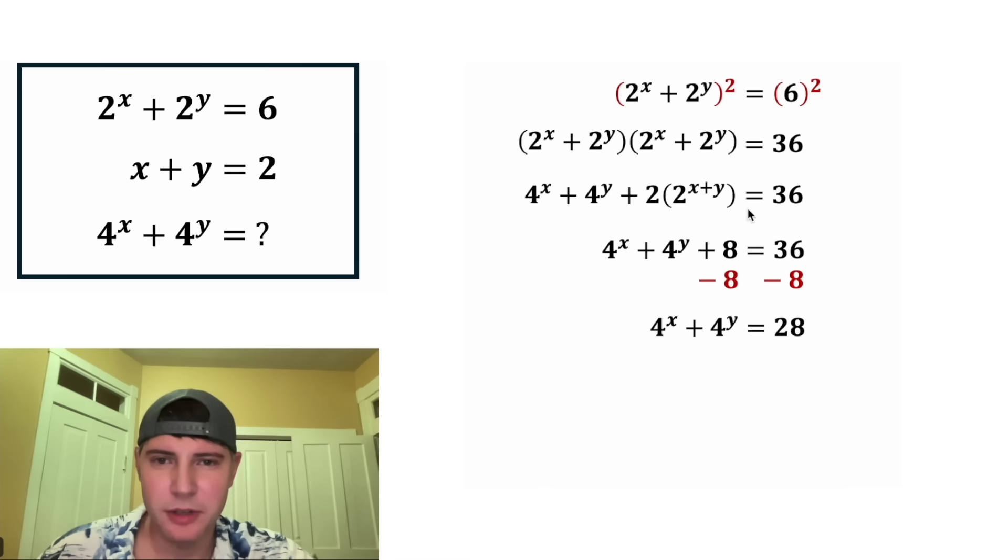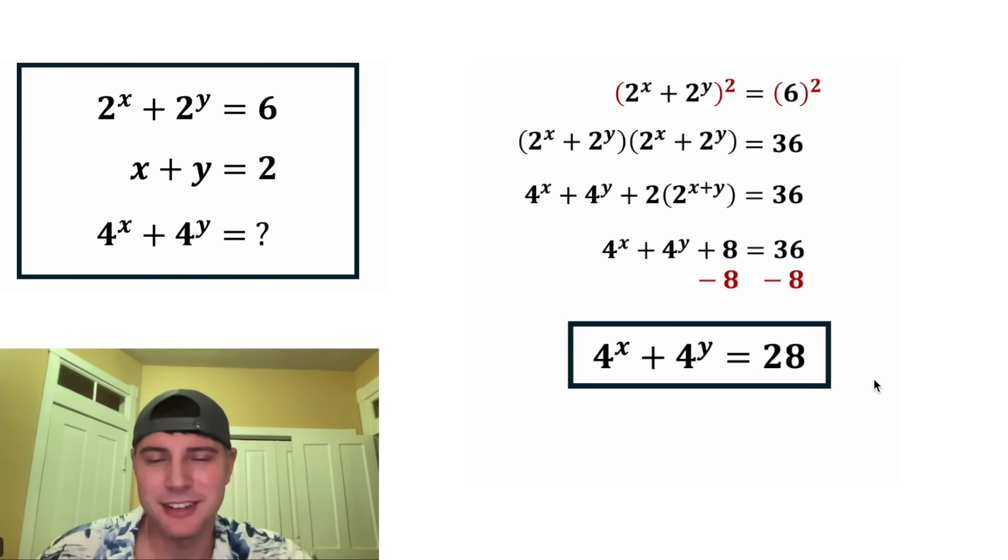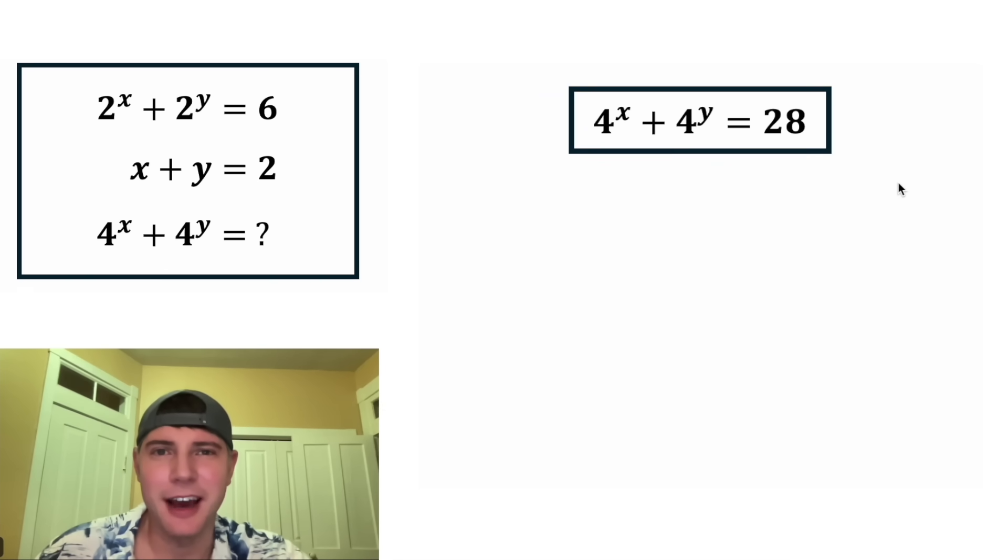So now what should we do? Oh, this is our answer. We're done. The question wanted to know, what is 4 to the x plus 4 to the y? Well, 4 to the x plus 4 to the y is equal to 28. This is the answer to our question. Let's put a box around it. For this system of equations, this is equal to 28. How exciting.